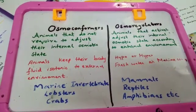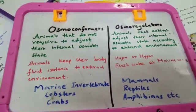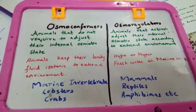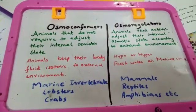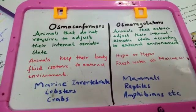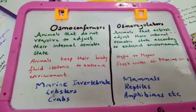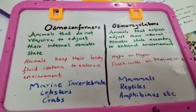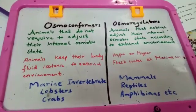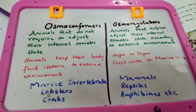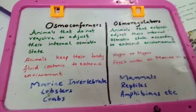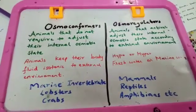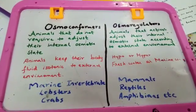Osmoregulators occur in two types of organisms: freshwater organisms and marine organisms. Freshwater environments have very low salt concentration — like ponds and lakes. Marine water, on the other hand, is water in which the salt concentration is very high.